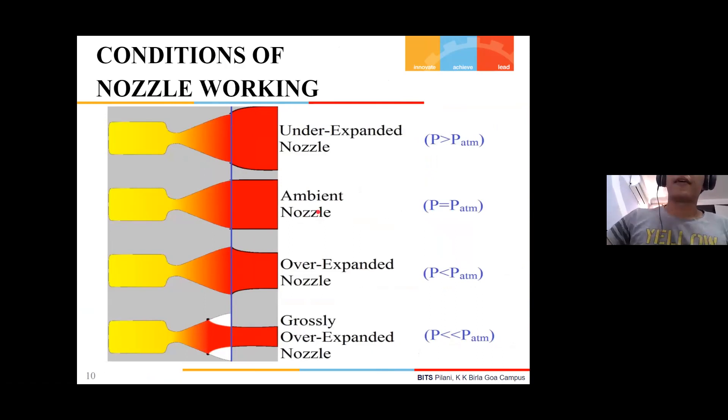Hello everyone. Before talking about two other passive methods, I'd like to introduce a few nozzle working conditions. We have under-expanded nozzle, ambient nozzle, over-expanded nozzle, and grossly over-expanded nozzle. In the under-expanded nozzle, the atmospheric pressure is very large compared to the pressure inside the nozzle. We will focus on over-expanded and under-expanded nozzles.